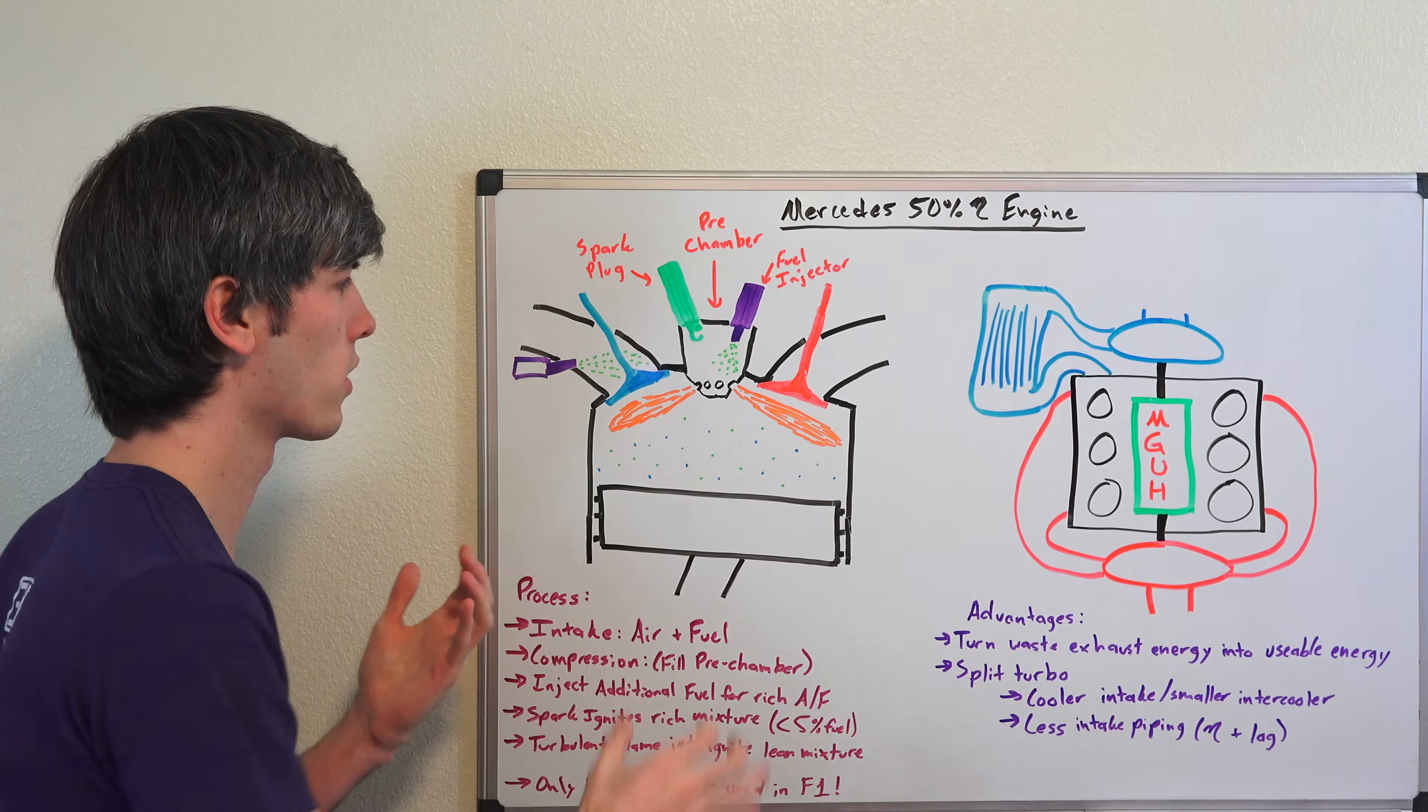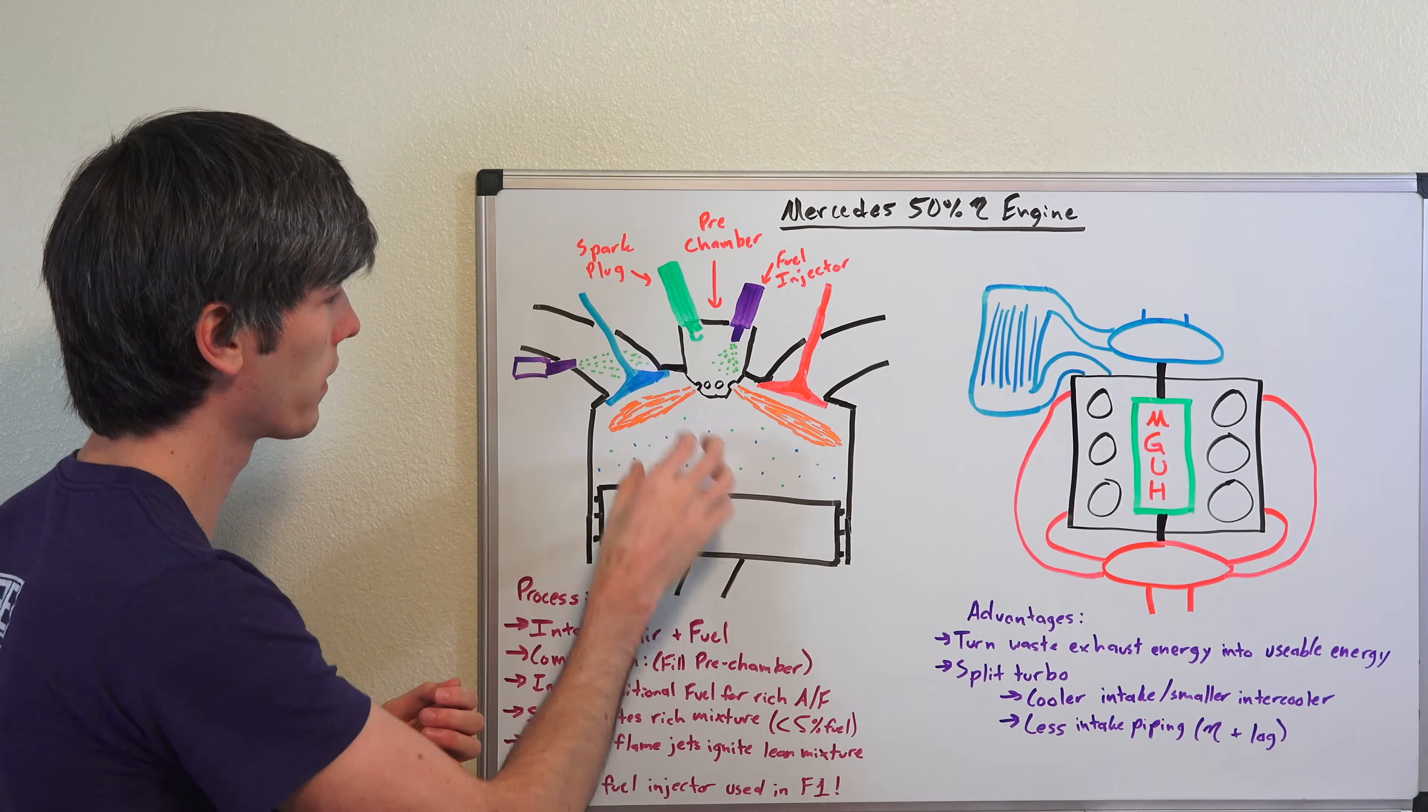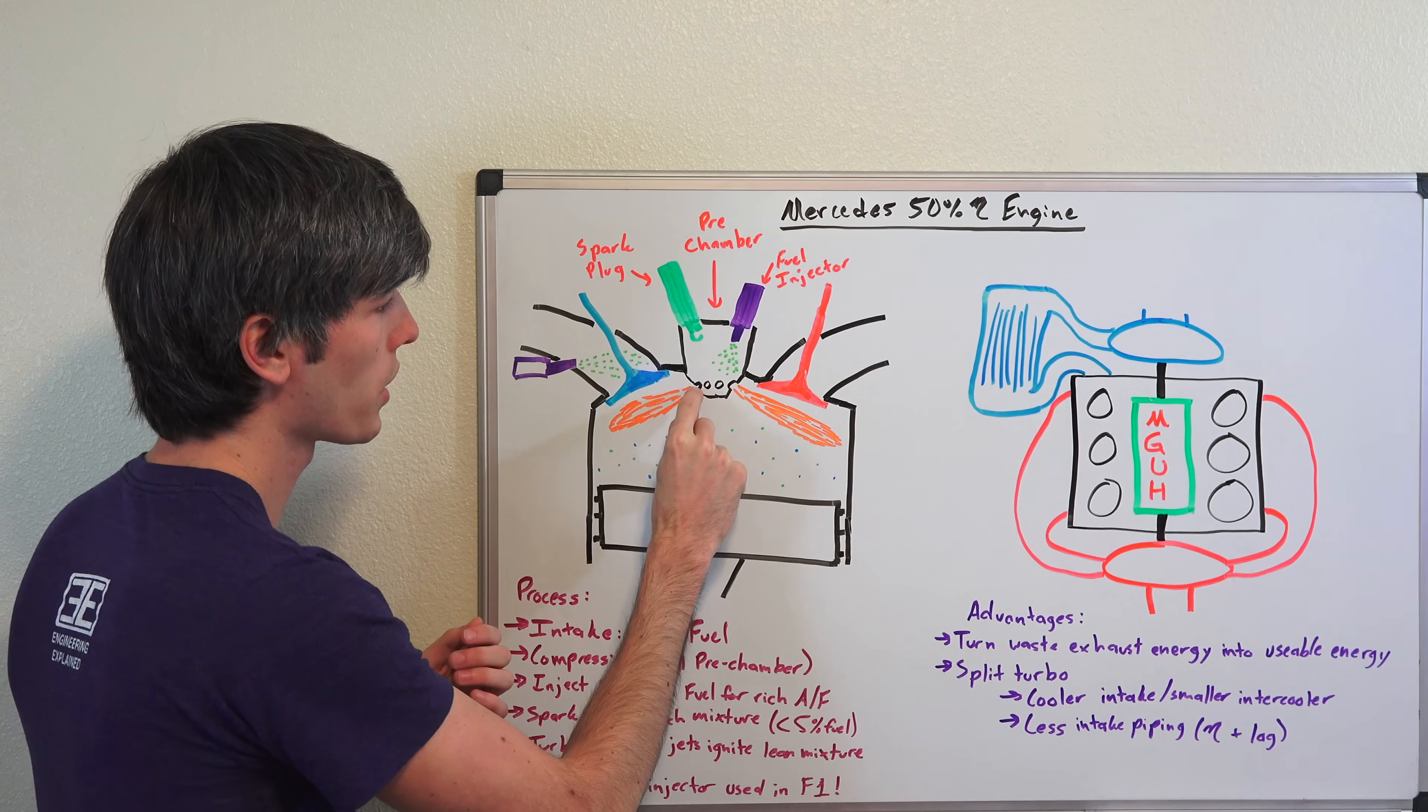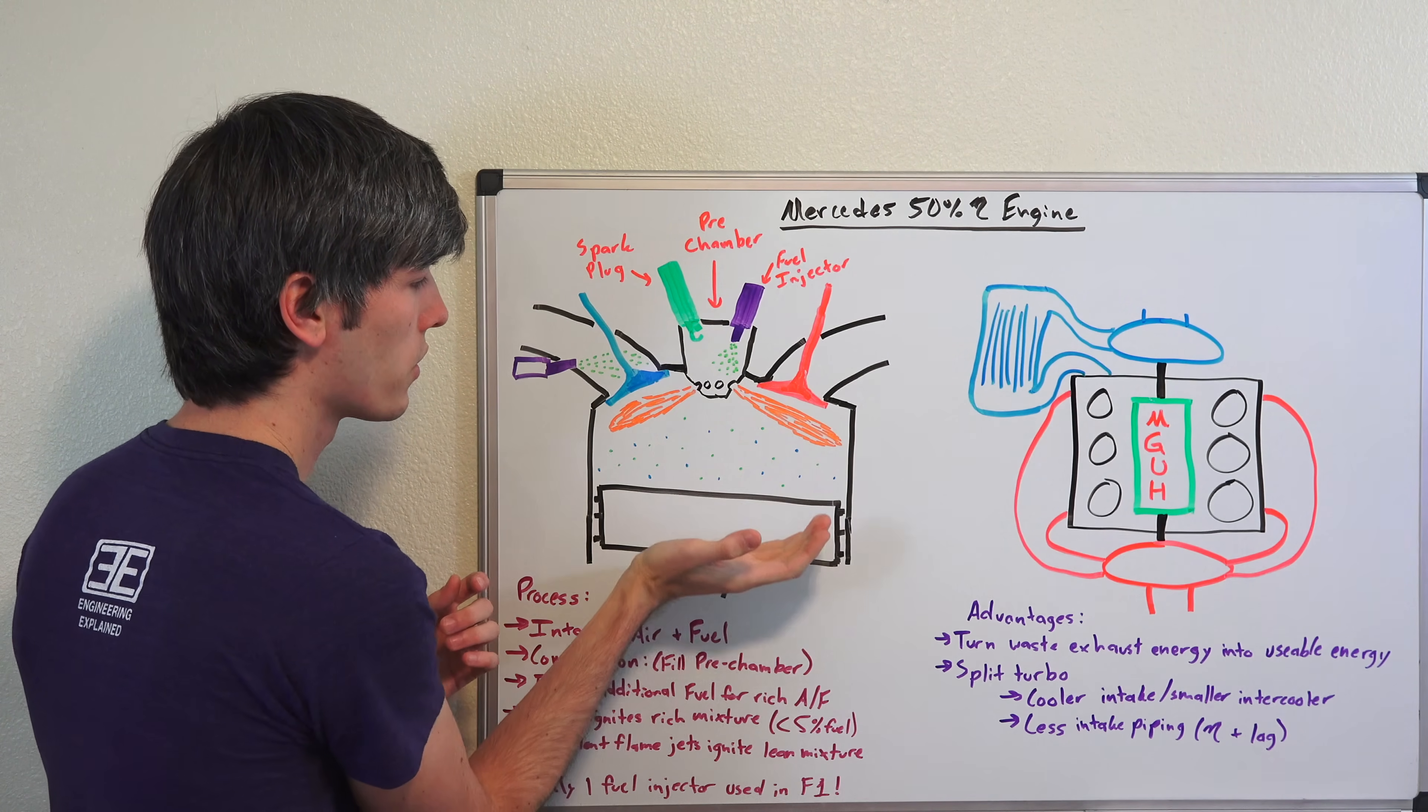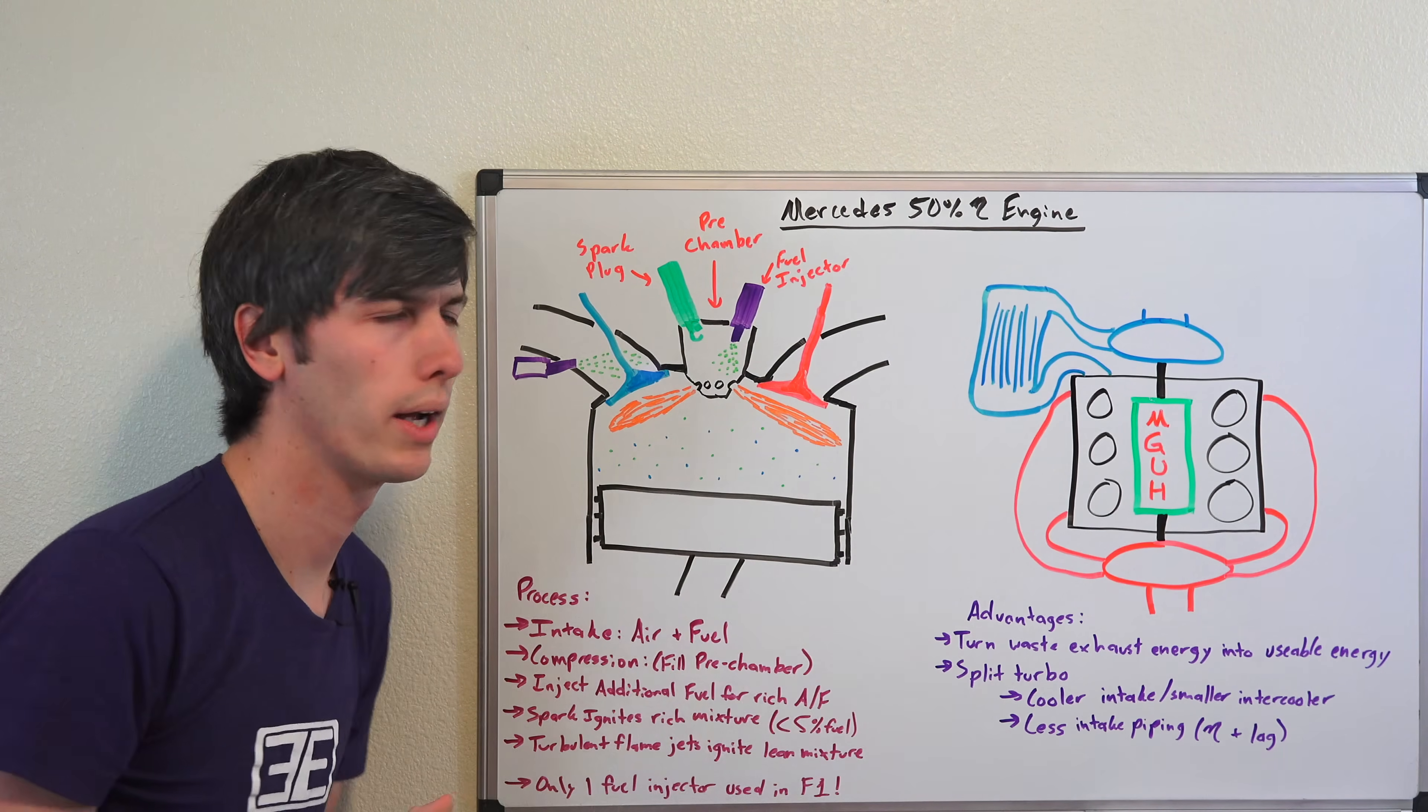So you have your intake stroke just like normal, you pull in air, perhaps fuel, you could have direct injection or port injection. With a setup like this, you pull in that air and fuel, you then compress it. Now there's this separate chamber up here which has these little holes, these little ports down on the bottom of it. And so that chamber is able to pull in air and fuel through those little holes as you were compressing. So you're pressing that air and fuel up, and some of that air and fuel will go into this pre-chamber right here.